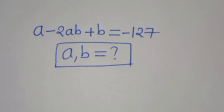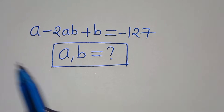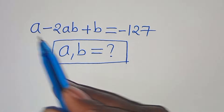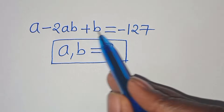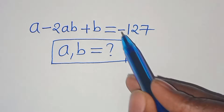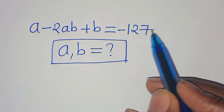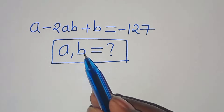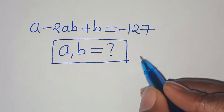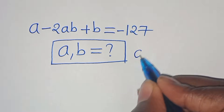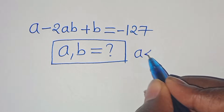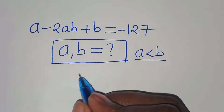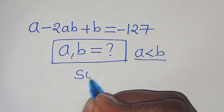Hello everyone, welcome to solve this nice algebra problem: a minus 2ab plus b equals minus 127. What are the values of a and b, given that a is less than b? Now let's provide a solution.